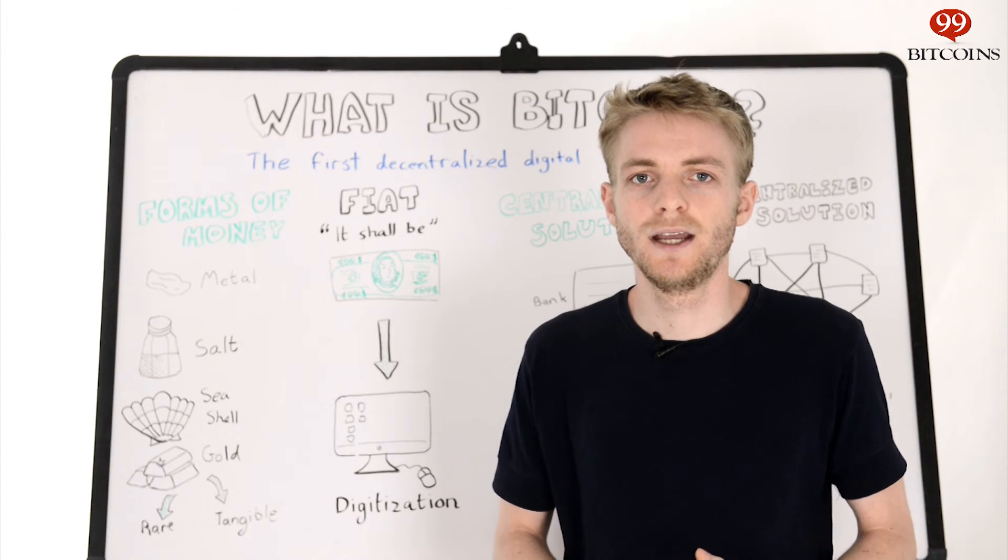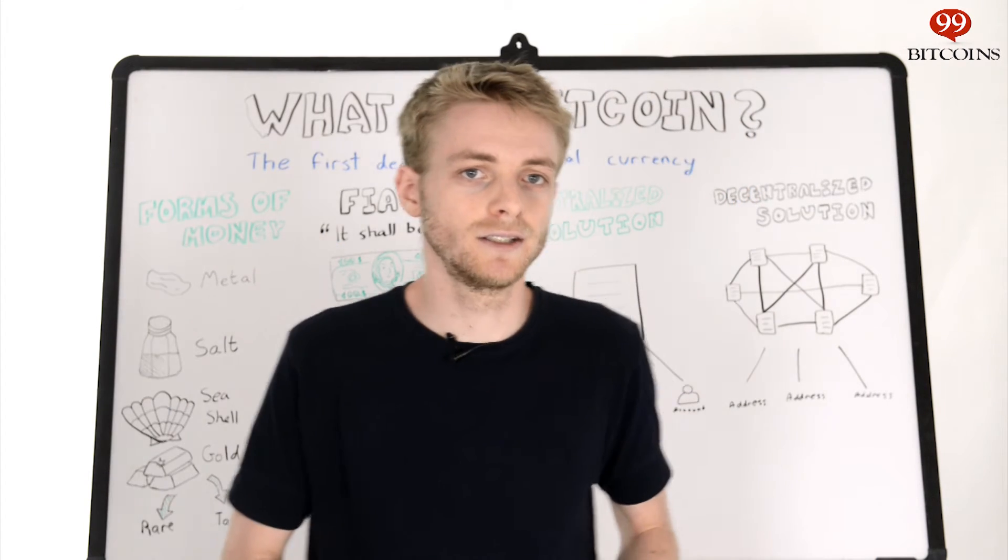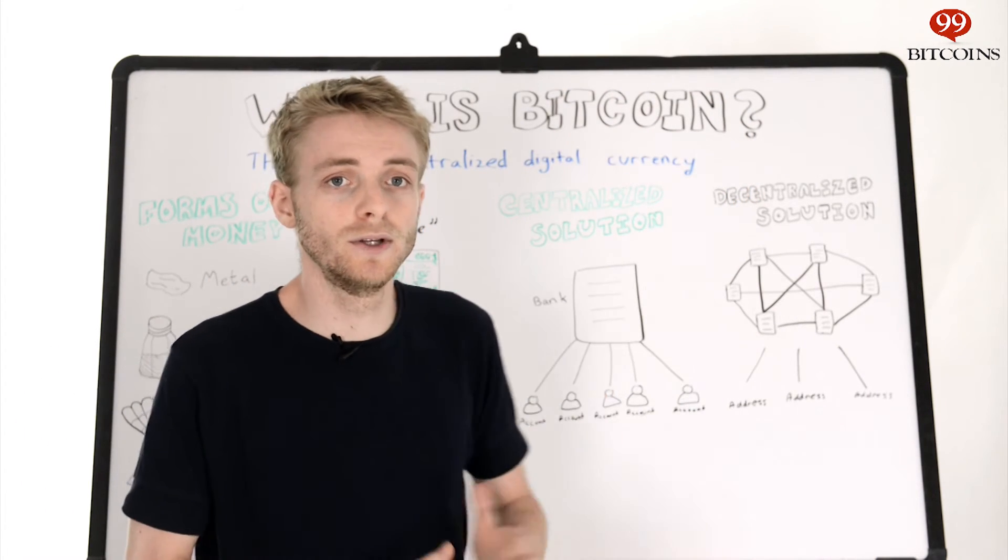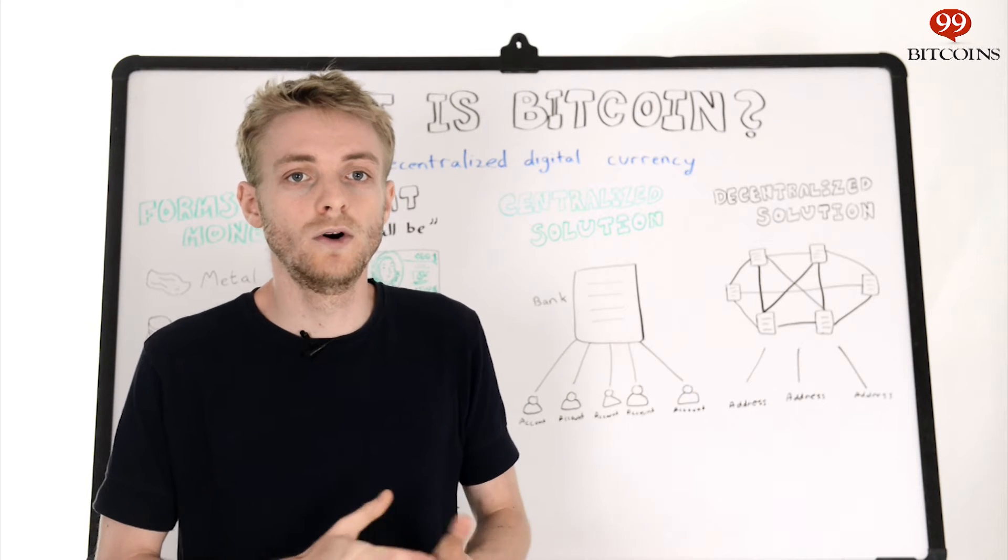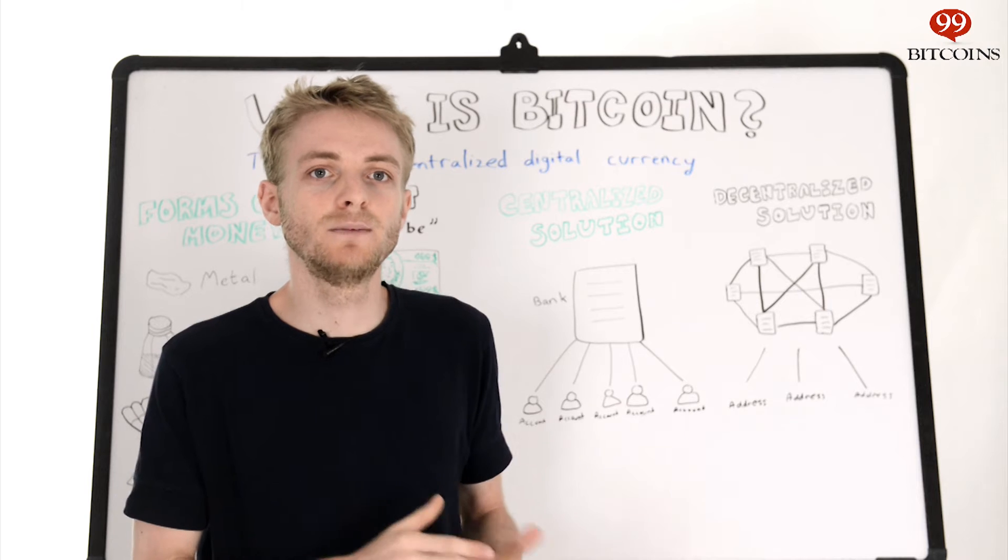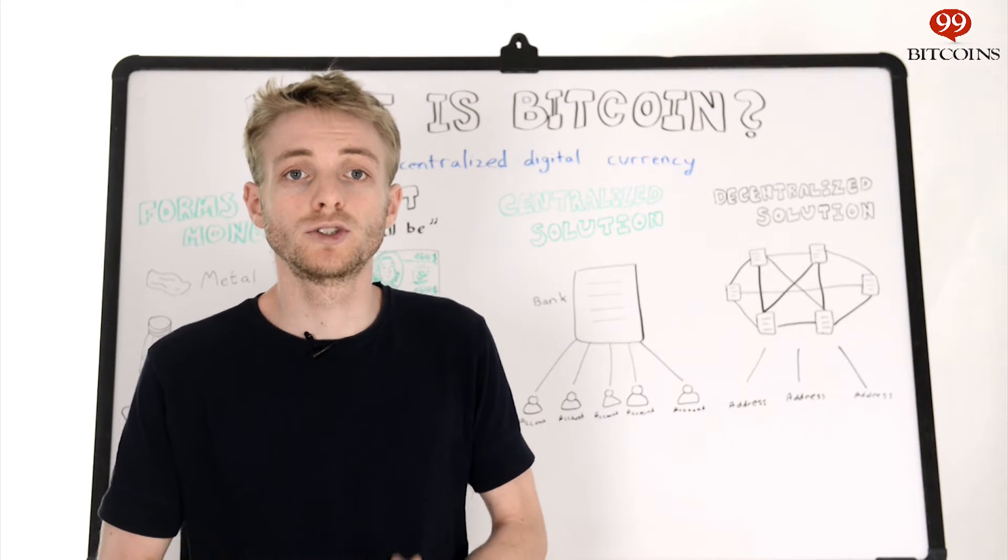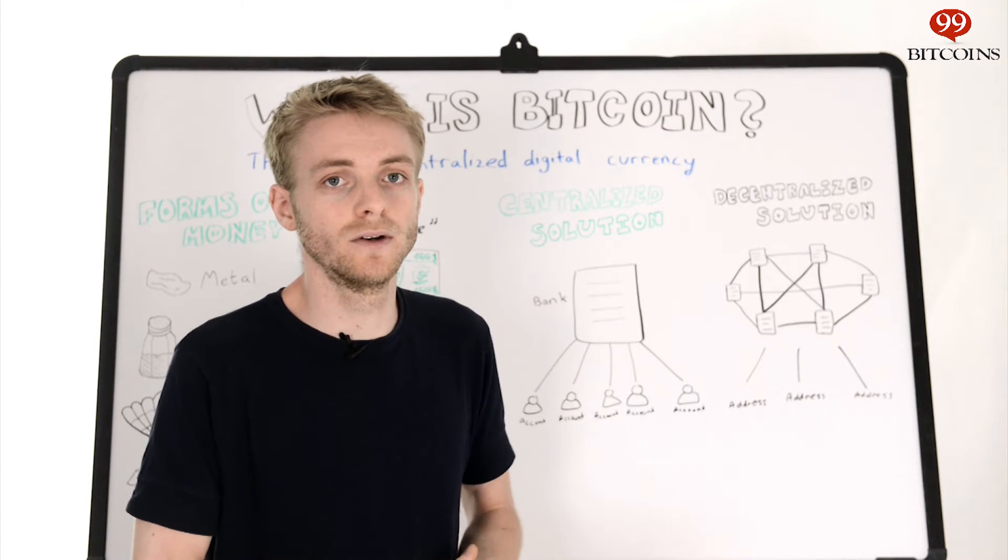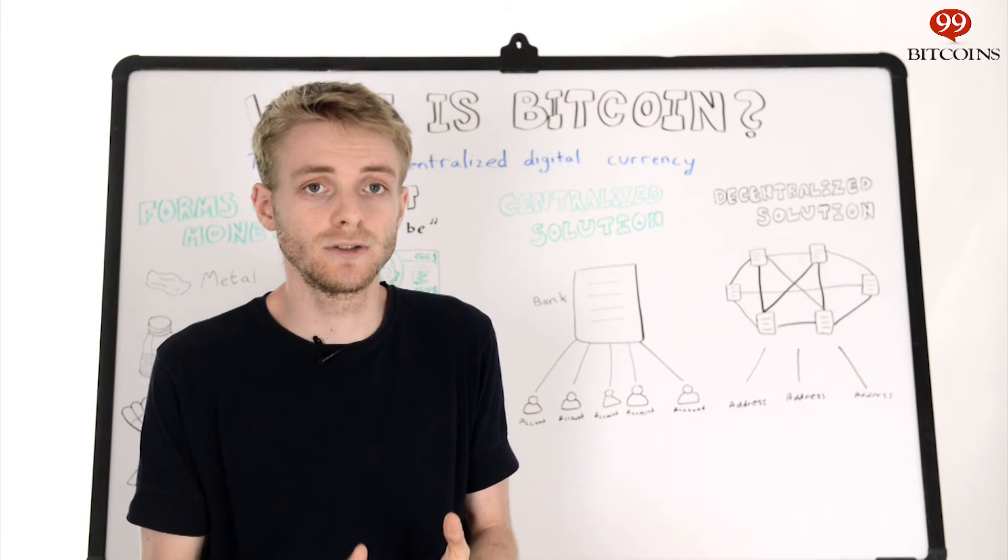The solution that banks use today is actually a centralized solution. They keep a ledger on their computer which keeps track of who owns what. Everyone has an account in this ledger, and the ledger keeps a tally for each account. We all trust the bank, the bank trusts their computer, and so the solution is centralized in the bank.